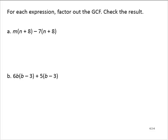For each expression, factor out the GCF and check the result. We have m times n plus 8, minus 7 times n plus 8. Notice that there are really two terms here: m times n plus 8 is one term, and minus 7 times n plus 8 is a second term.